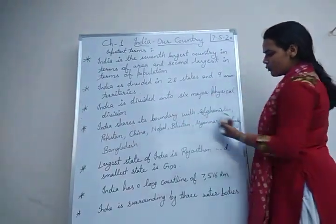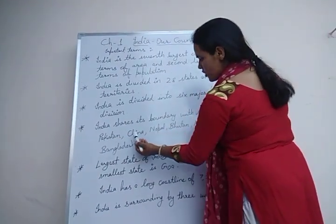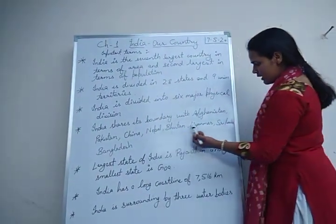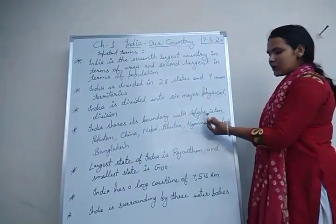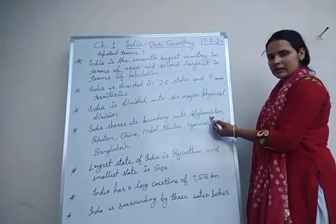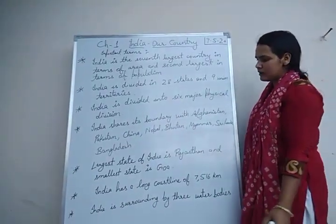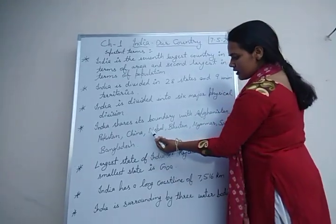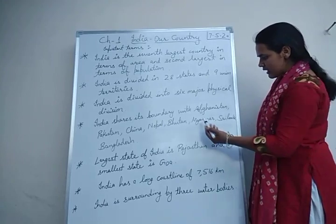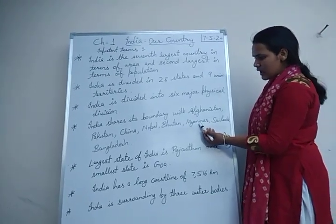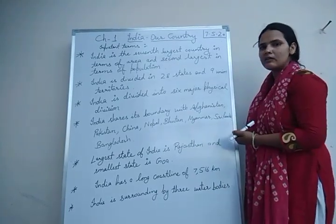India shares its boundary with Afghanistan, Pakistan, China, Nepal, Bhutan, Myanmar, Sri Lanka, and Bangladesh. Afghanistan and Pakistan are in the northwest, China, Nepal, and Bhutan are in the north, Myanmar and Bangladesh are in the east, and Sri Lanka is in the south.